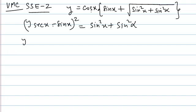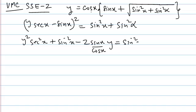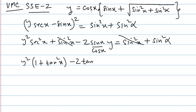And then I open this perfect square. Y square sec square x, sorry, plus sin square x minus 2 sin x. And you know sec is 1 by cos into y equals to sin square x plus sin square alpha. Cancel sin square x with sin square x. And y square, I write this as 1 plus tan square x minus 2 tan x, minus 2 tan x y equals to sin square alpha.